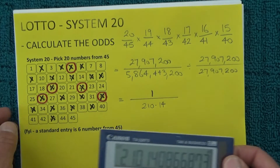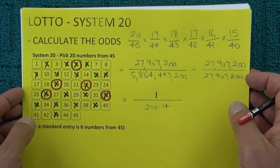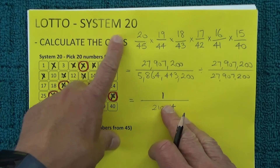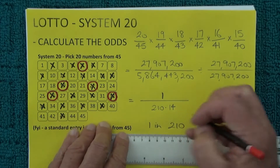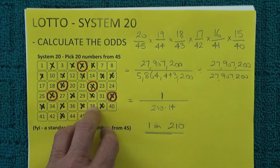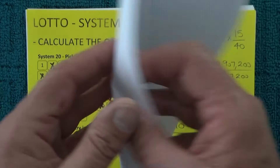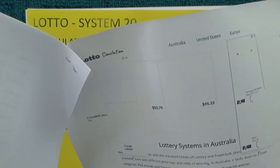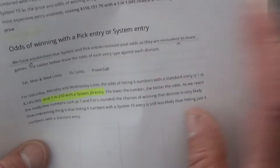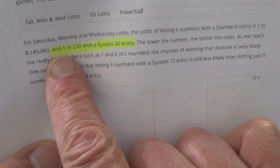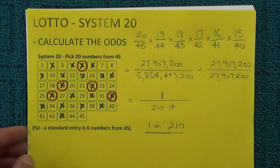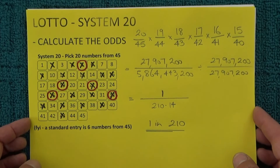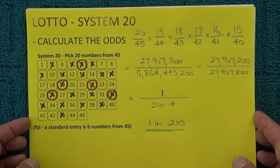Therefore, the odds of winning first prize in Lotto with a System 20 entry is one chance in 210, which are fairly good odds. To prove this is correct, I found a printout from the internet from a Lotto simulation website showing odds of winning with a System 20 entry, and it shows one chance in 210 — confirming my calculation is correct. I hope you've enjoyed this video, thanks for watching, goodbye for now.